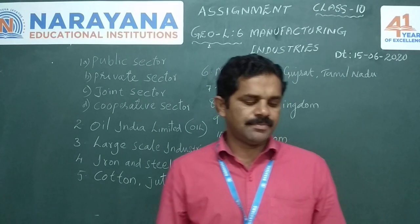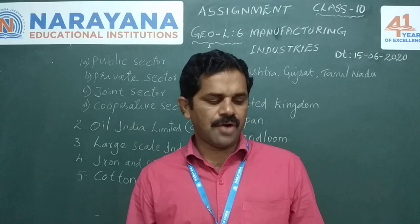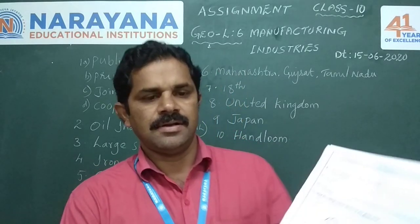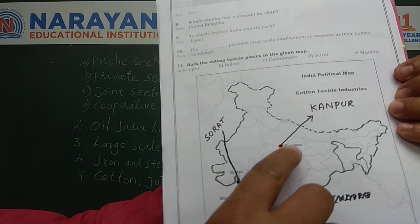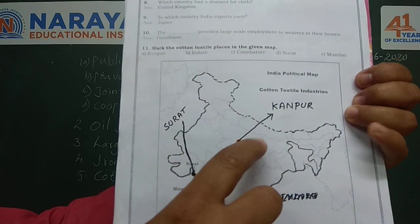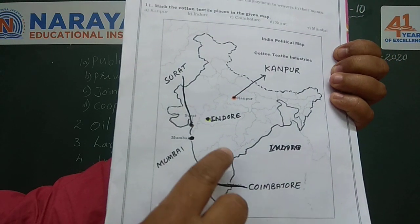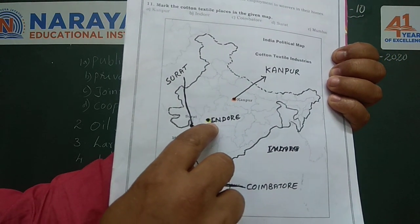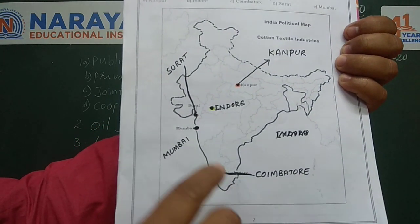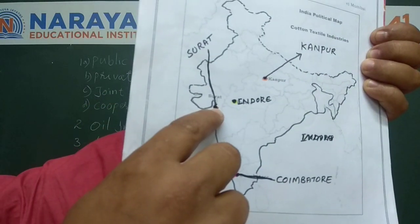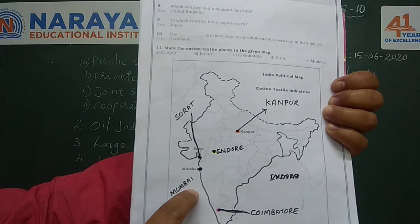Question number 11 is based on map point E. On the outline map of India, we have to mark the cotton textile places. Five places are being asked. The first place is Kanpur, which is in Uttar Pradesh. The second point is Indore, which is in Madhya Pradesh. The third one is Coimbatore, which is in Tamil Nadu. The fourth one is Surat, which is in Gujarat. And the fifth one is Mumbai, which is in Maharashtra. These are the five places of cotton textile.